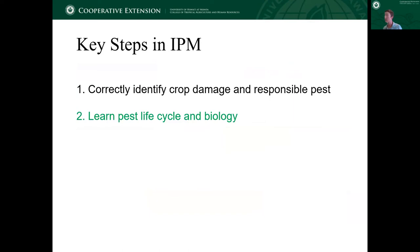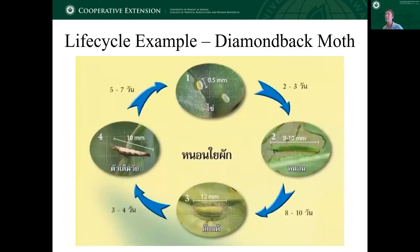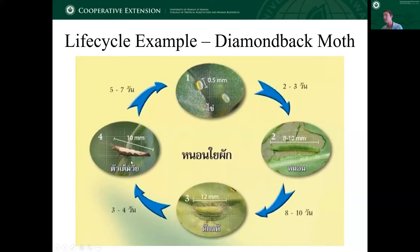The next step after correctly identifying the crop damage and pest is to learn that particular pest's life cycle and biology, so we can find the best point to intervene. This is an example with diamondback moth, which is a really common pest of cruciferous vegetables. Starting from the egg — two to three days — it moves into the larval stage, then eight to ten days into a pupae, and then three to four days later the adult emerges. For example, if you're going to use something like Bt, a Bacillus thuringiensis spray, as an intervention — if you spray when they're in the adult phase, it's not going to have any effect. So understanding the life cycle tells you when they are most vulnerable and when your intervention will be most effective.